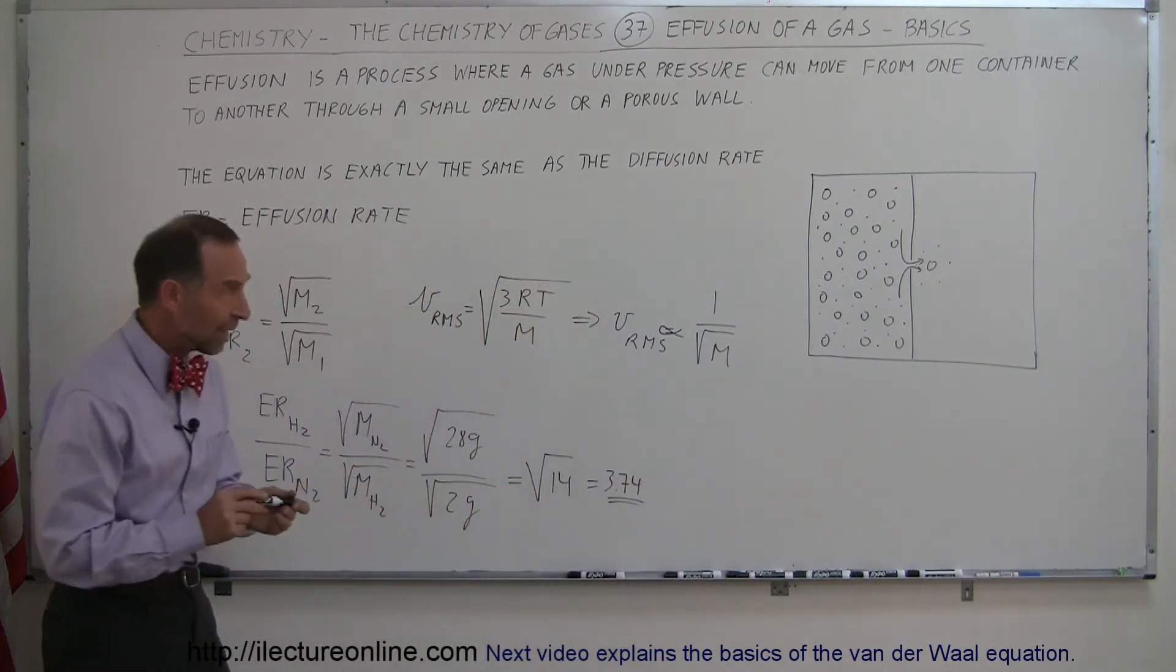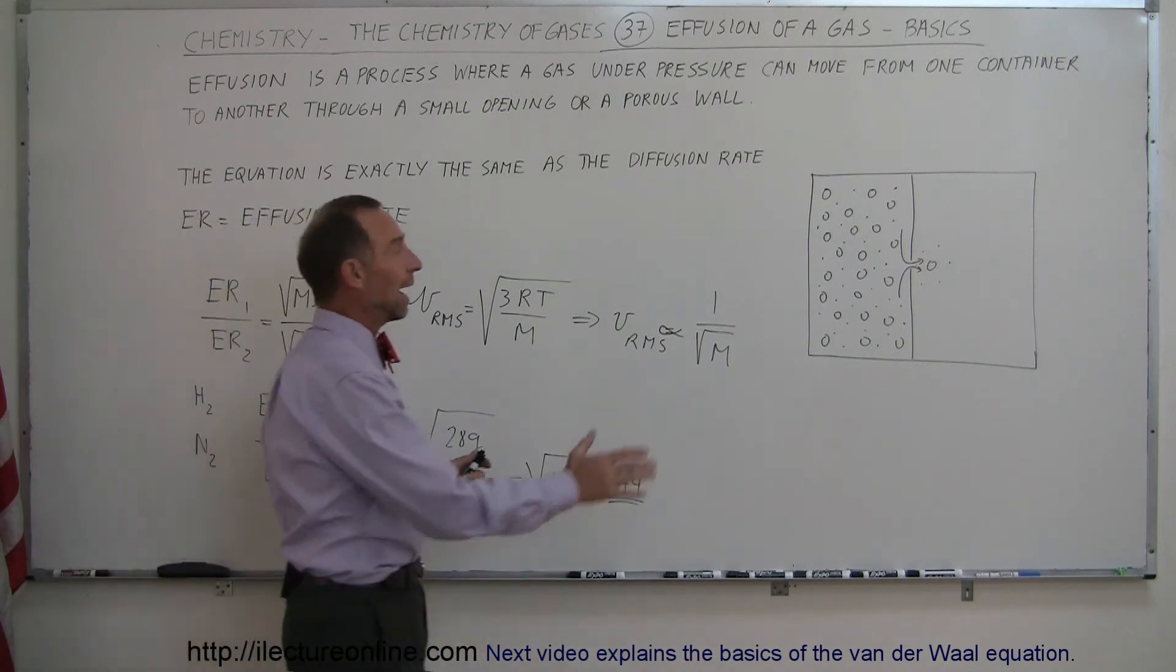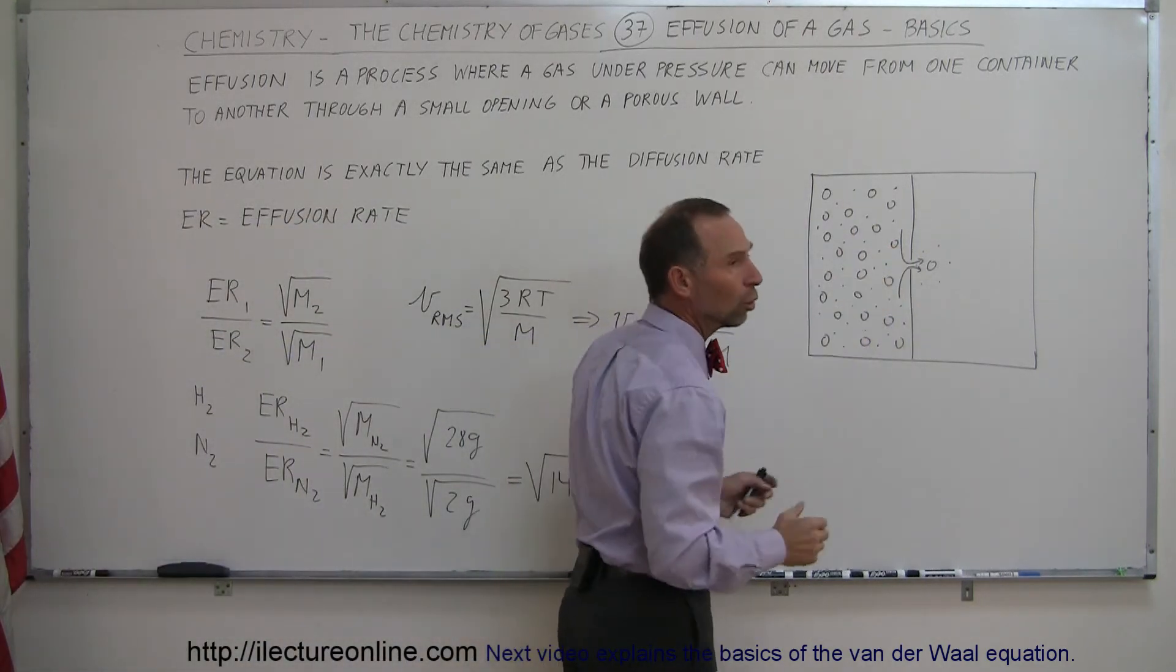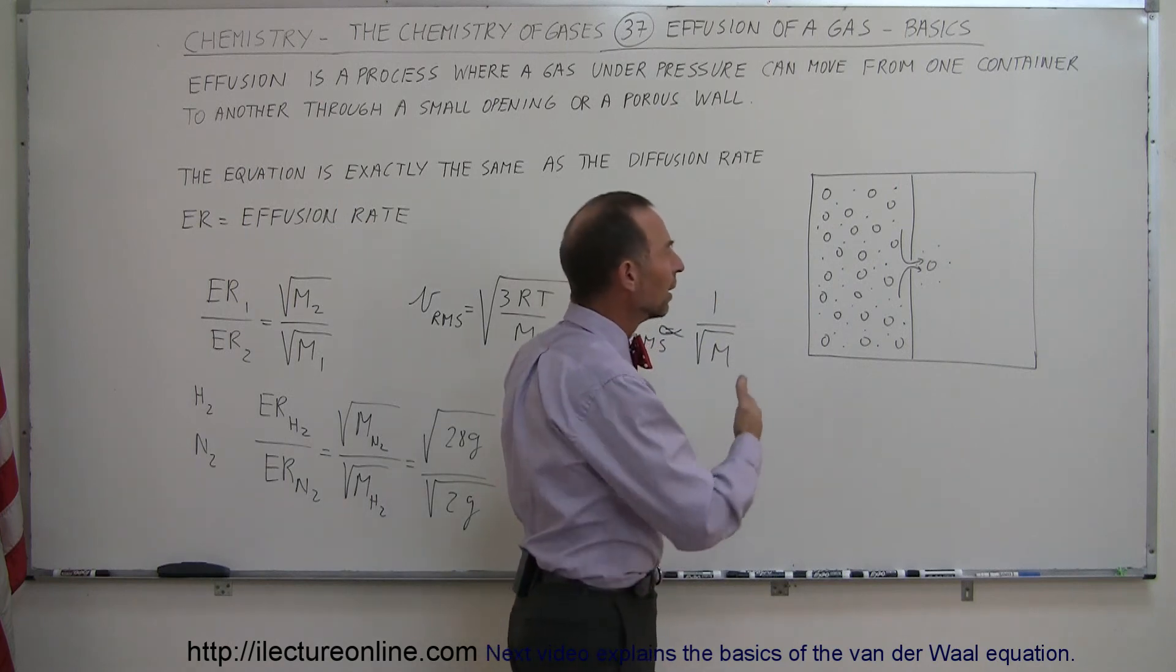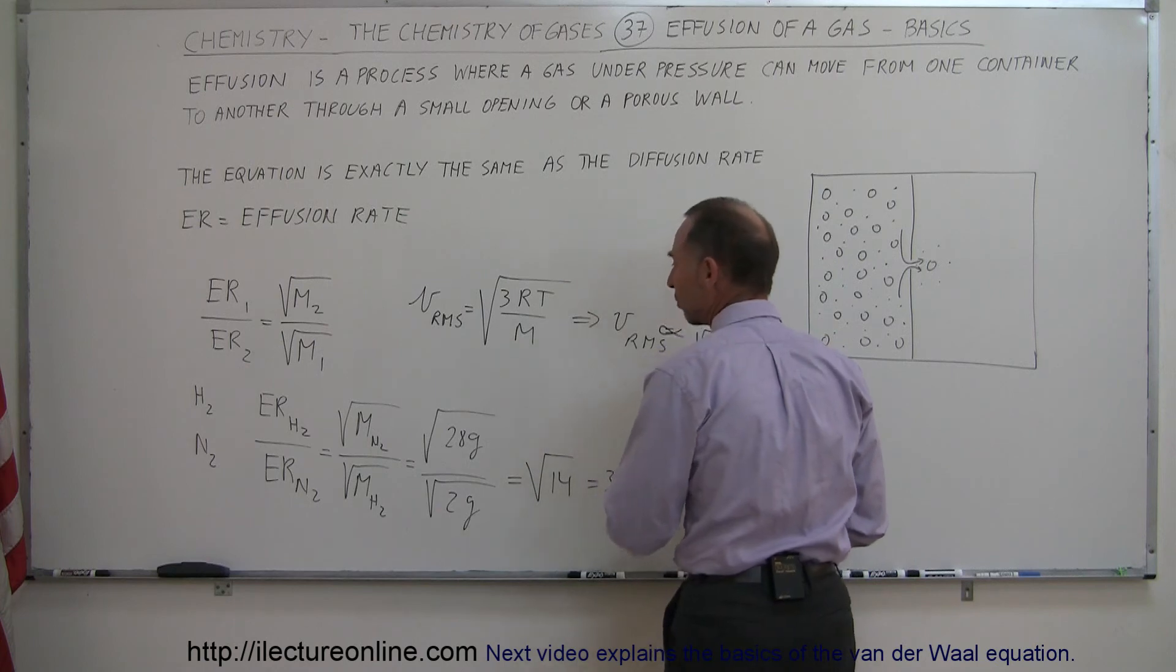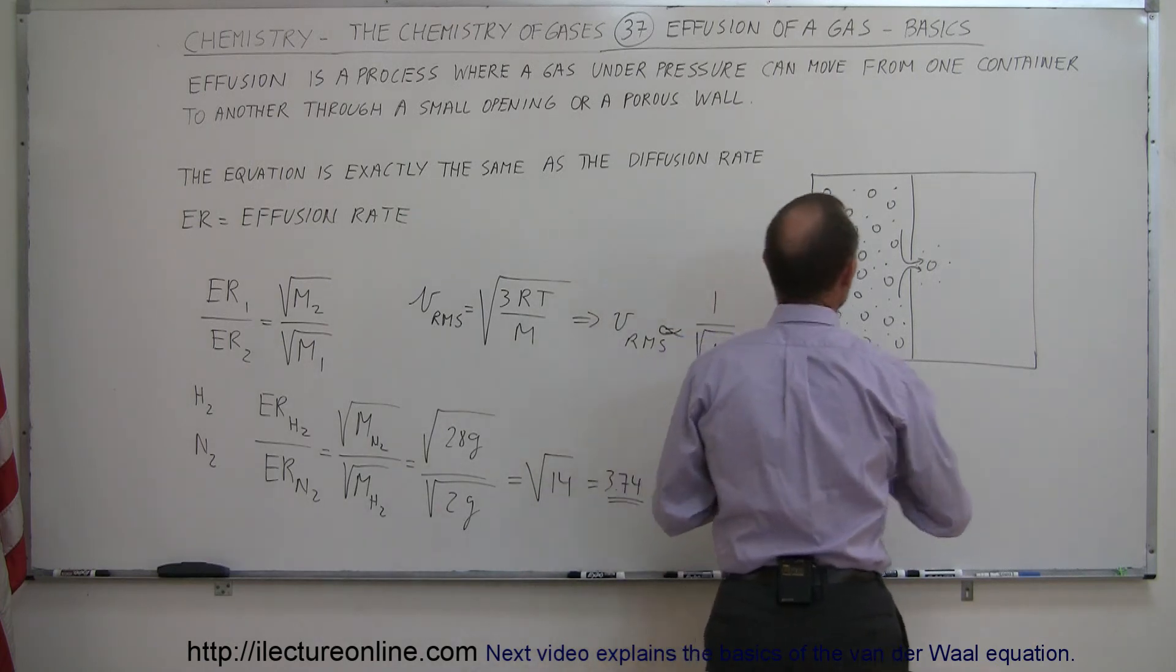Which means that if we have a mixture of hydrogen and nitrogen gas in one container with a small hole or a porous membrane, the number of hydrogen molecules making it to the other side would be 3.74 times as many as the number of nitrogen molecules.